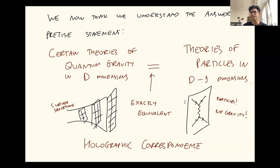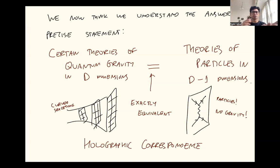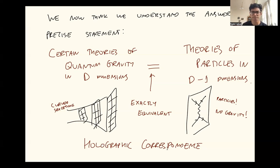Another way to say this is that if you look at certain theories of particles, they look like they are actually a gravitational theory in one higher dimension — much like if you look at your credit card, there's a little hologram of a bird or something that is two-dimensional, but if you look at it right, it looks like it's three-dimensional. That is why this is called the holographic correspondence, because a certain thing looks like it just grows an extra dimension when you examine it in the right way.